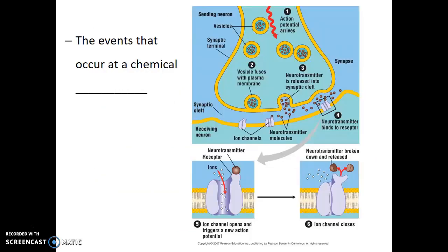Here we can see what one of these chemical synapses looks like. The action potential arrives at the end of the chemical synapse, triggering a vesicle with neurotransmitters to fuse with the plasma membrane. Those neurotransmitters are released into the synaptic cleft, which in turn opens sodium ion channels on the receiving cell. If enough of those channels open, this may trigger an action potential in that receiving cell. The neurotransmitters in the synaptic cleft are quickly broken down by enzymes after a short period of time.